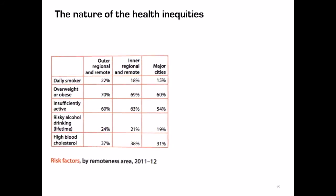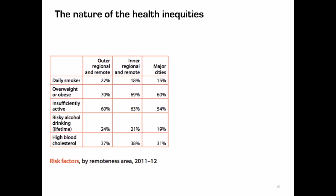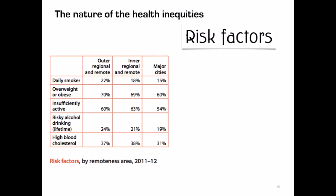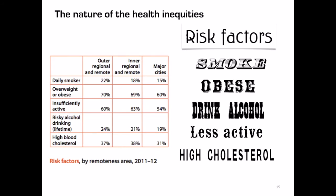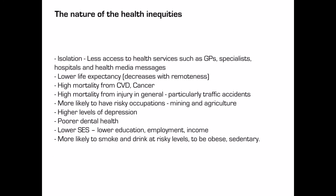The nature of health inequities can be summed up in this table. You can see that those in rural and remote areas are more likely to smoke, be obese, drink alcohol, be less active, have high cholesterol, and they are more likely to have a risky occupation.